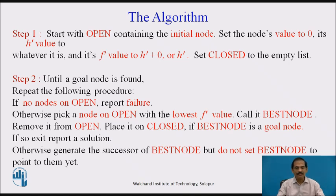We start with the first step: start with the open list containing the initial node. Set the node's G value to zero, its H' value to whatever it is, and its F' value becomes H' plus zero, or H' alone. Now set closed to the empty list.